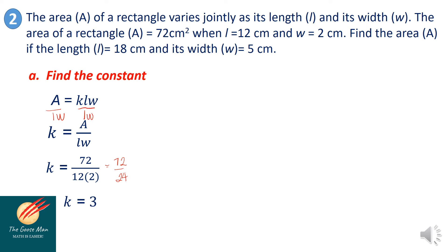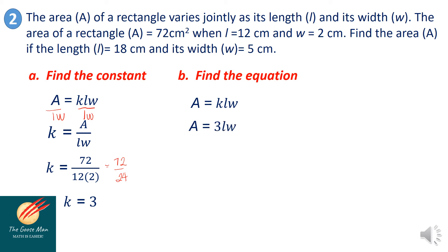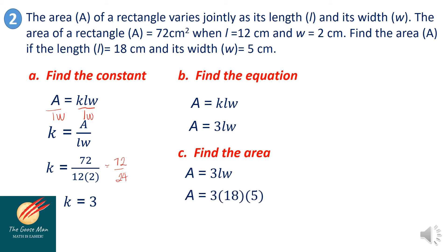Now that the value of K is equal to 3, let's find the equation: A is equal to K times L times W. Substituting, area is equal to 3 times L times width. Next, find the area: area is equal to 3 times 18 times 5, so the area is equal to 270. Therefore, the area is equal to 270 square centimeters.